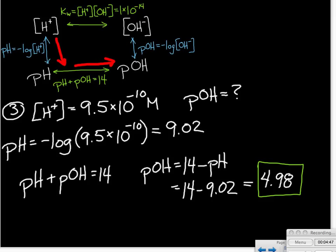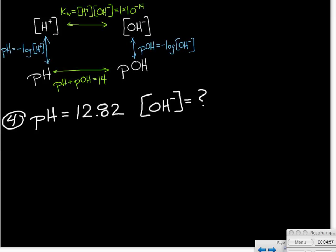If you go the other route and first find the concentration of the hydroxide ion, there's nothing wrong with it. Mathematically, you'll end up in the same place. Our final example is just a similar example, just working backwards. This time we're given the pH, and we're asked to find the hydroxide ion concentration.